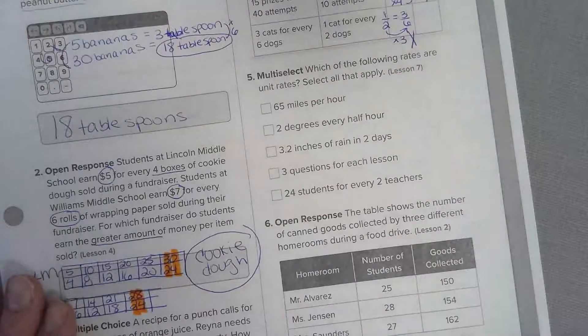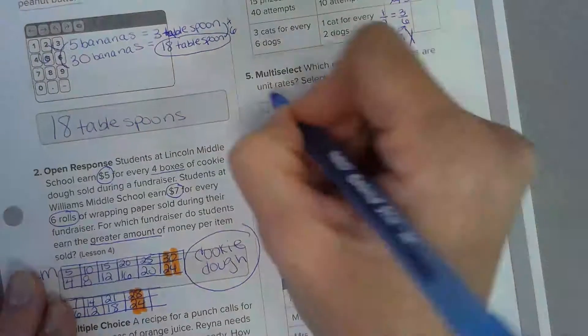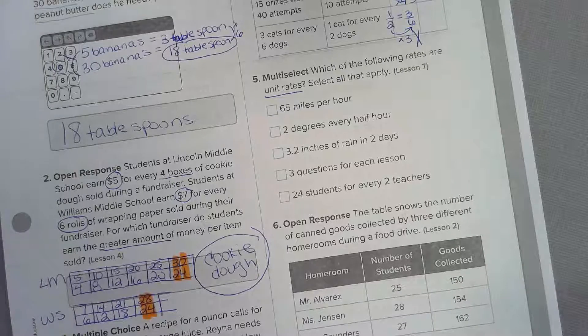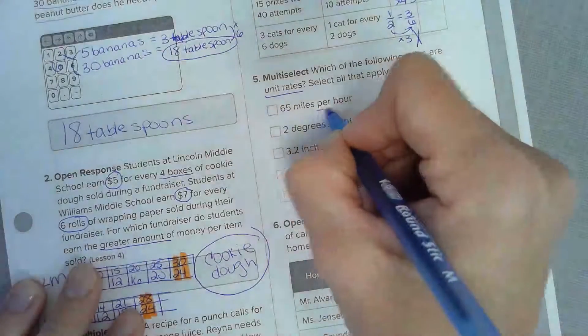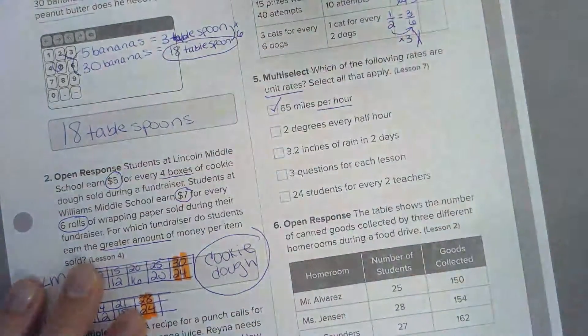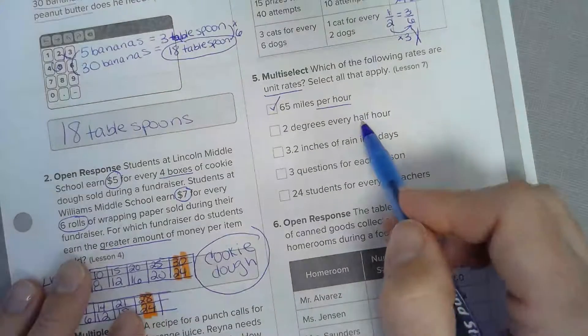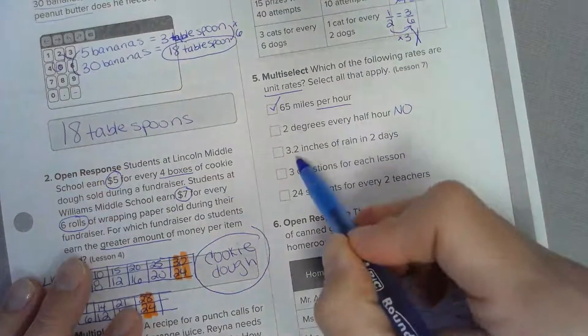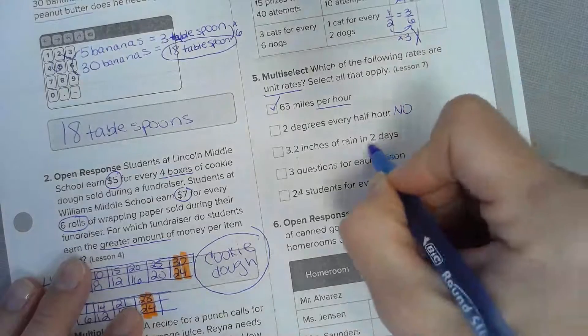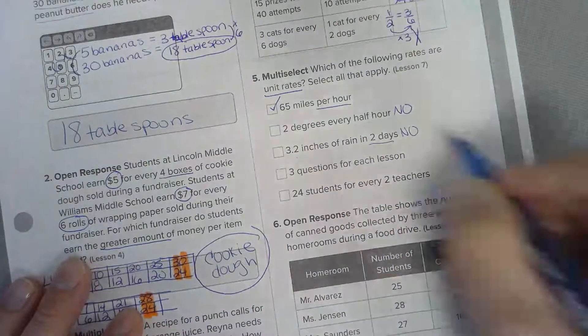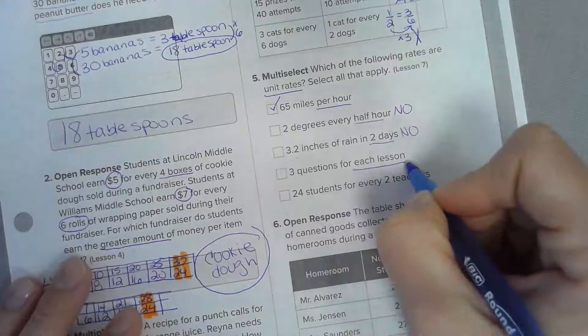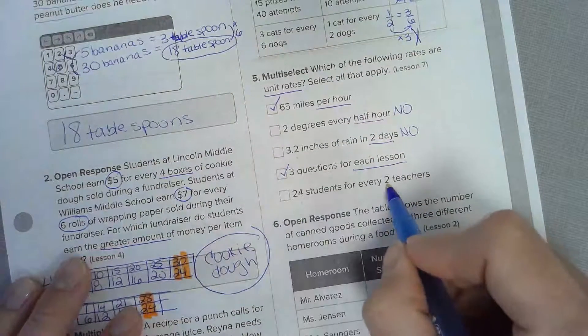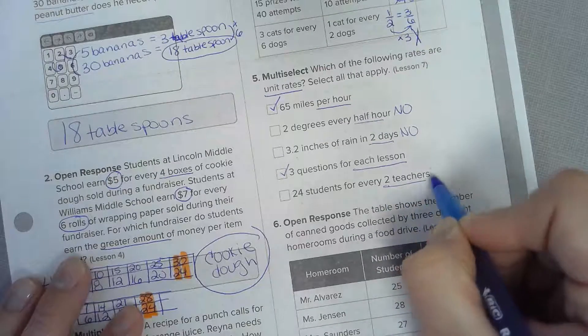Multi-select: which of the following rates are unit rates? Unit rates are per one of something. Sixty miles per hour - this per hour means one, so that is a unit rate. Two degrees every half hour - is that per one of something? No. Three point two inches in two days - no. Three questions for each lesson - each lesson means one lesson, so yes. Twenty four students for every two teachers - we would want to know for one teacher, so no.